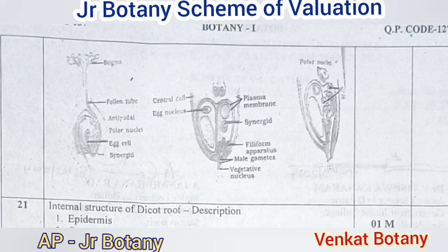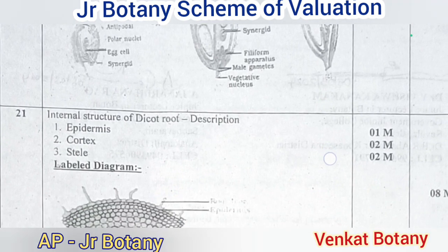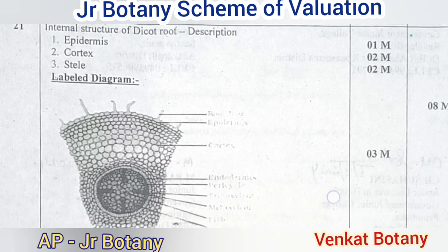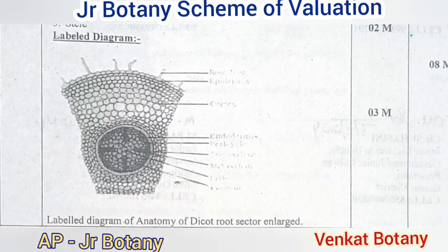Question number 21: describe the internal structure of a dicot root. The epidermis adds one mark, cortex two marks, endodermis two marks, stele three marks, and the diagram one mark — total eight marks.